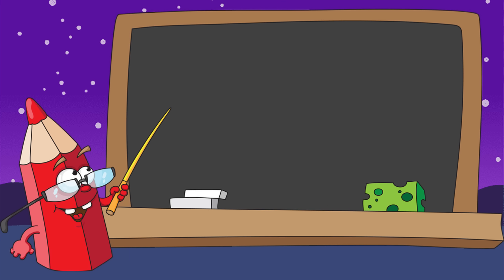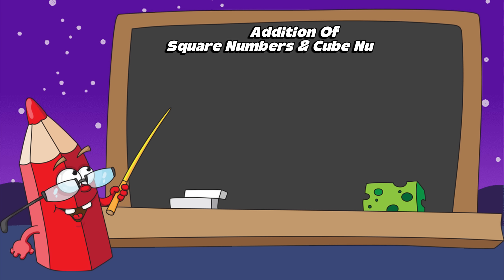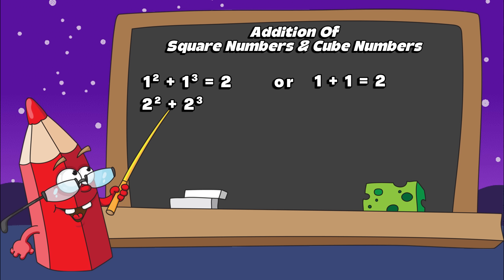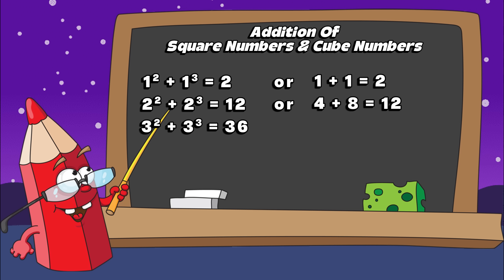Now join me and let's do addition of square numbers and cube numbers. One square plus one cube equals two. Or one plus one equals two. Two squared plus two cubed equals twelve. Or four plus eight equals twelve. Three square plus three cube equals thirty-six. Or nine plus twenty-seven equals thirty-six.